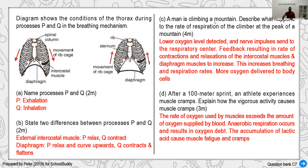A higher-order question: a man is climbing a mountain — describe what happens to the rate of respiration at the peak. At higher altitudes, atmospheric pressure is lower than at sea level, so there is less oxygen available. The body detects reduced oxygen and sends signals to the respiratory center in the brain. The muscles responsible for breathing — the diaphragm and external intercostal muscles — contract and relax rapidly, increasing breathing rate so more oxygen enters the body and reaches the cells.